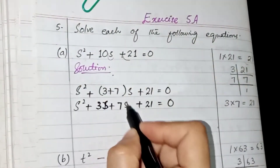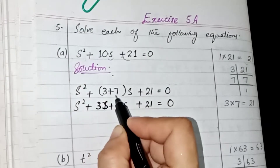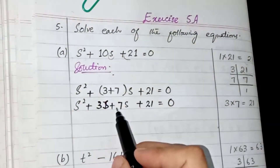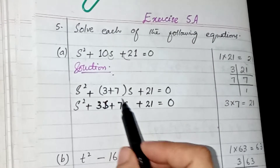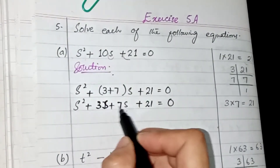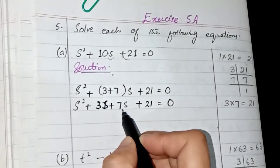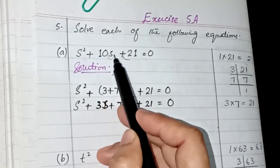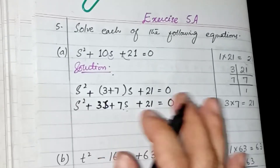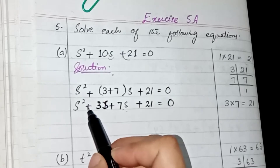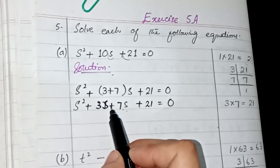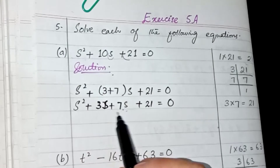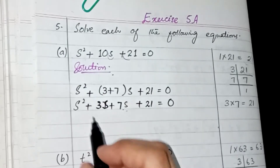When we split any bracket, we have to recheck it. The method of checking is to add the two split terms. If it gives the same result as in the question, we are doing a correct solution. When we add plus 3s and plus 7s, we get plus 10s — so we are doing it correctly.